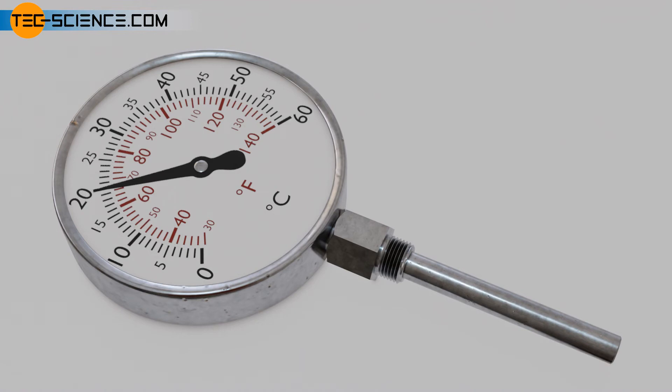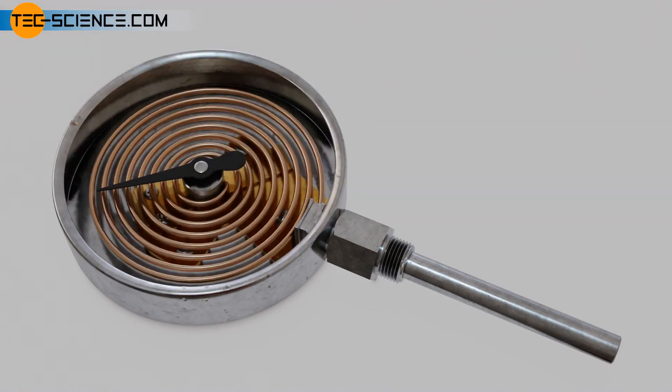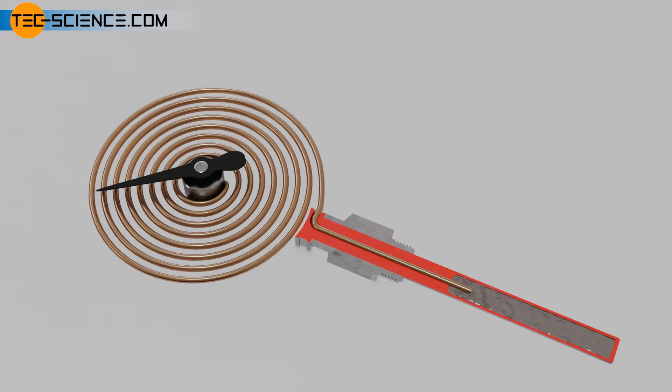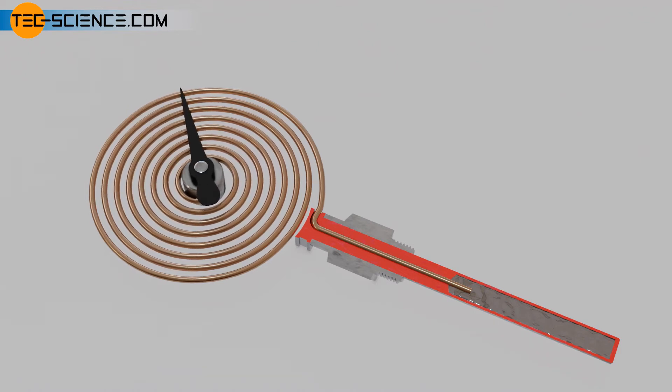In liquid-in-metal thermometers, a tube is wrapped into a coil and filled with a thermometric liquid to indicate the pressure rise. If the temperature of the liquid rises and with it the pressure, it tries to bend up the spiral tube like a spring. Such a tube is also referred to as a Bourdon tube.